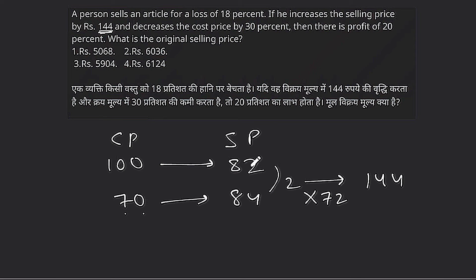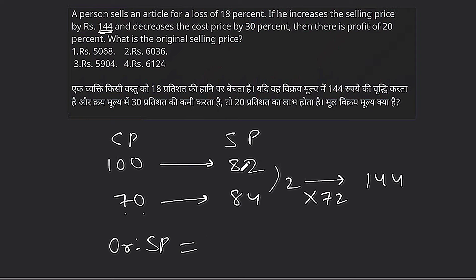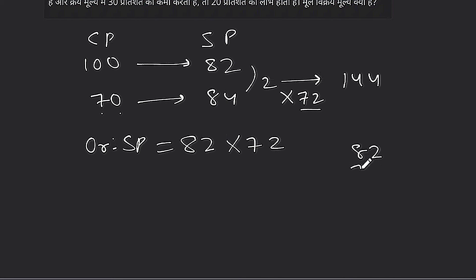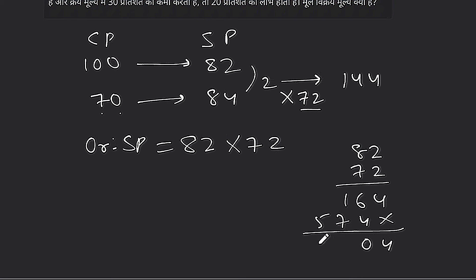Now finding the original selling price. The cost price is 72 times the unit value. Calculating: the original selling price at 82% of cost price gives us — carrying through the arithmetic — the value comes to 5904.